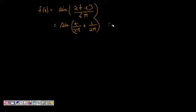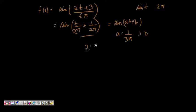So this is now of the form sine of at plus b and we know sine t, the period is 2 pi and a here is 1 by 3 pi is greater than 0, so period of this will be 2 pi by 1 by 3 pi is equal to 6 pi squared.